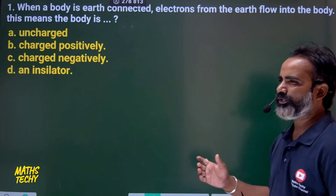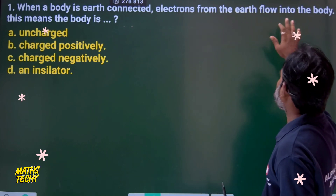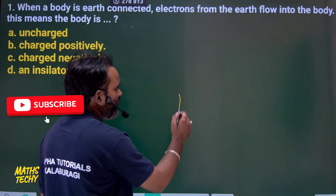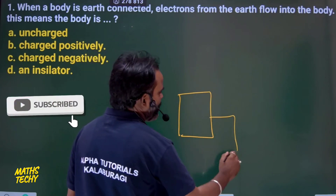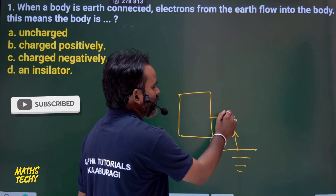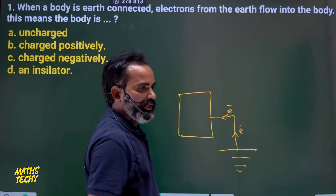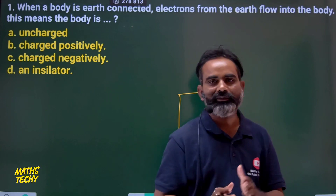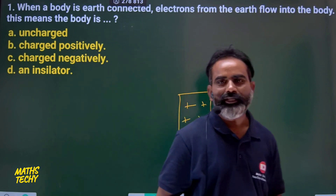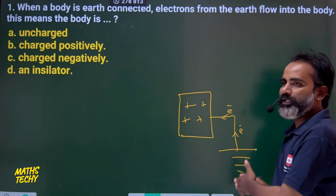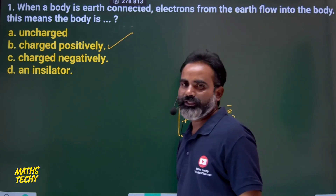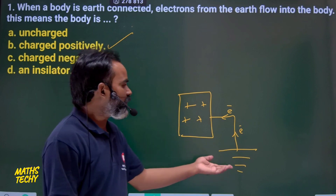Question 1: When a body is connected to earth, electrons from the earth flow into the body. This means the body is getting charged. When we earth a body, electrons flow into it — electrons are negatively charged, so they are attracted to the body. That means the body should be positively charged. Option B is correct: the body is charged positively, so only then will electrons flow from earth to body.